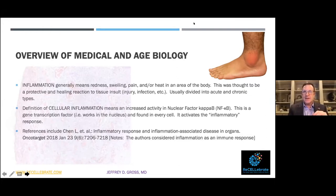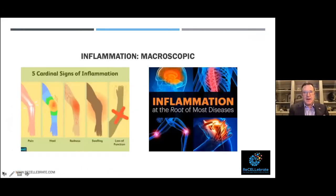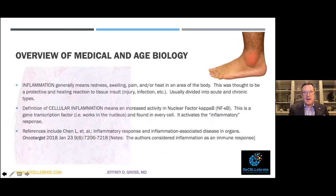The cellular definition of inflammation is defined as an increase in activity of nuclear factor kappa-B (NF-κB). The cells actually have a change internally, which is happening while the macroscopic changes are happening to the body. NF-κB is a gene transcription factor working in the nucleus — it's found in every cell and it activates the inflammatory response. The word 'inflammation' is somewhat vague, and we have two different definitions here: acute versus chronic.